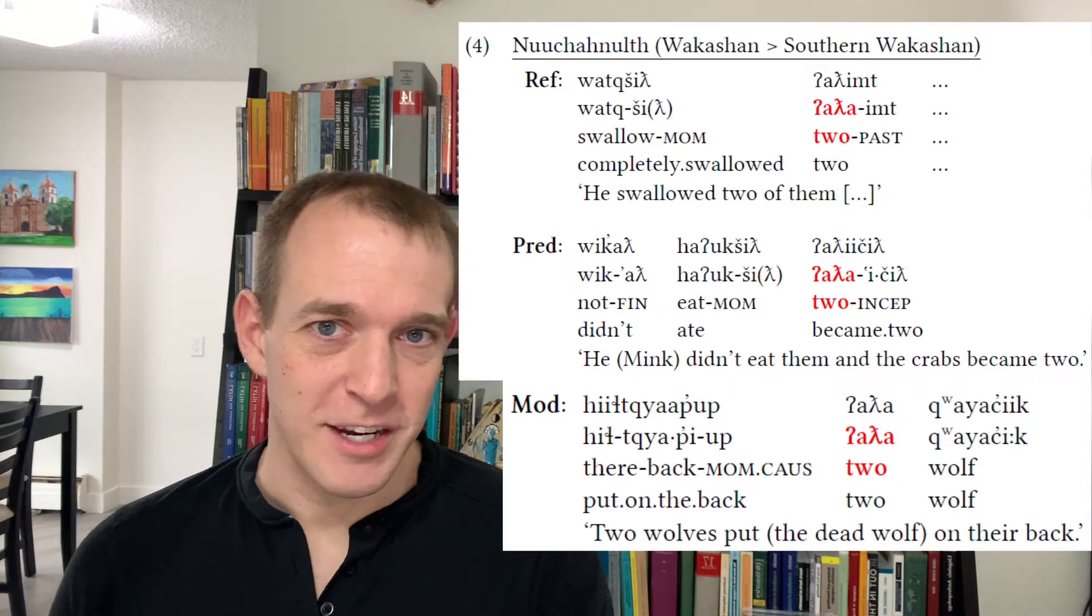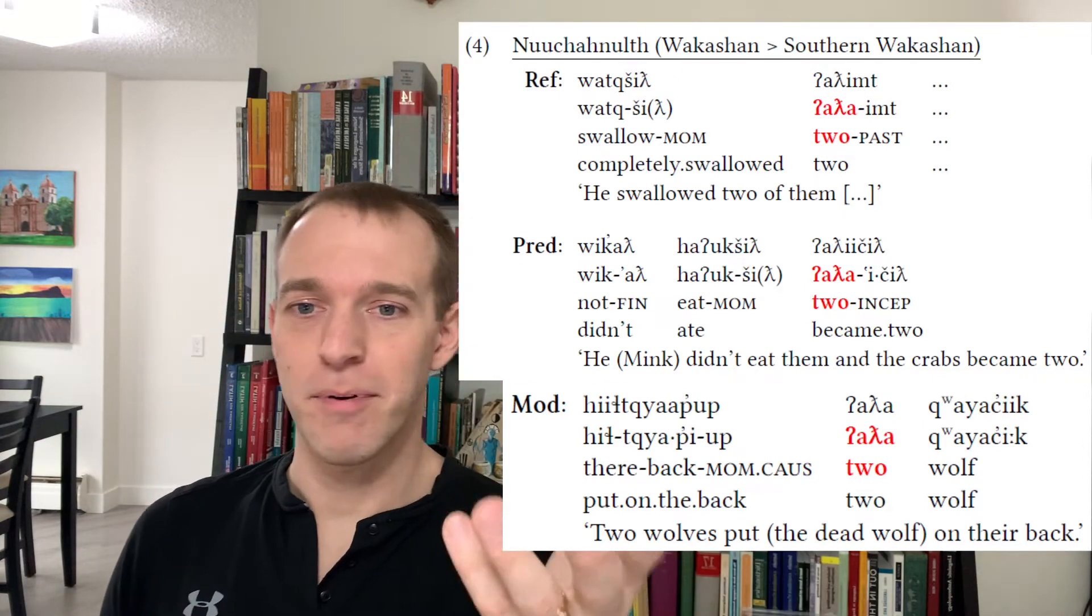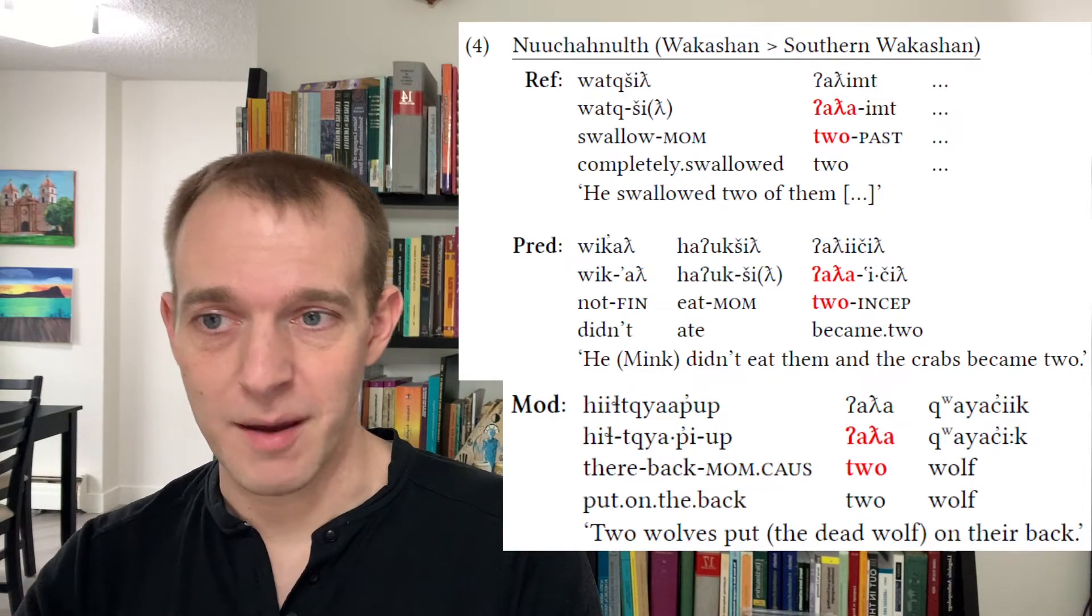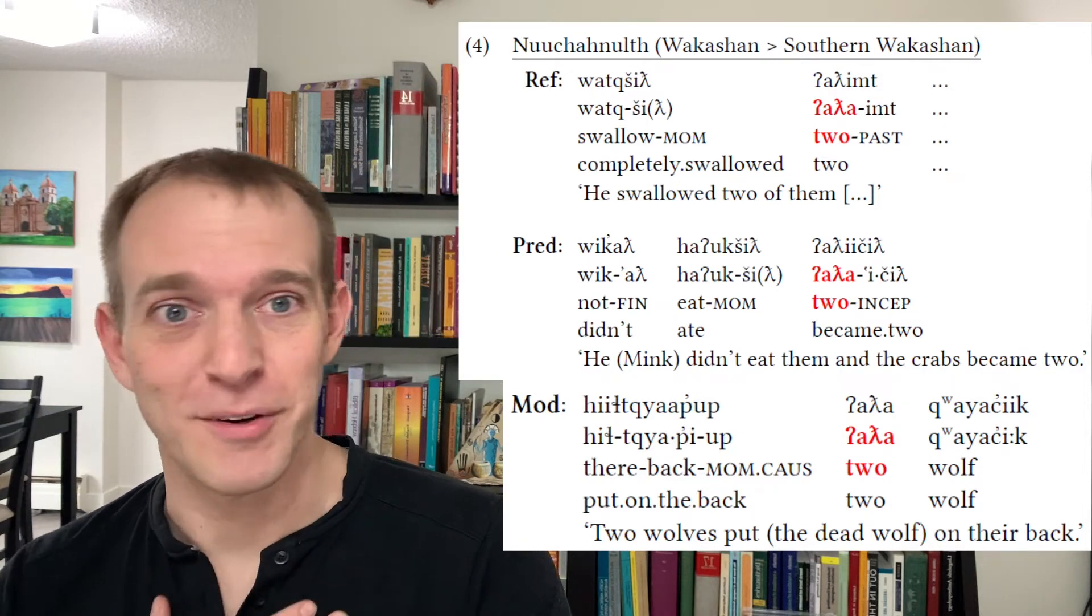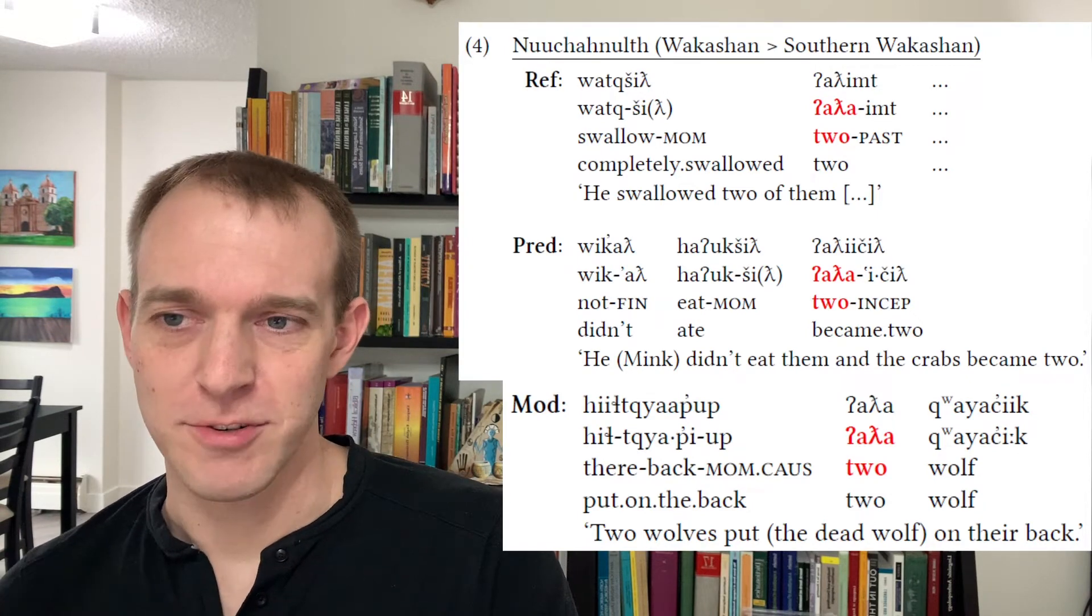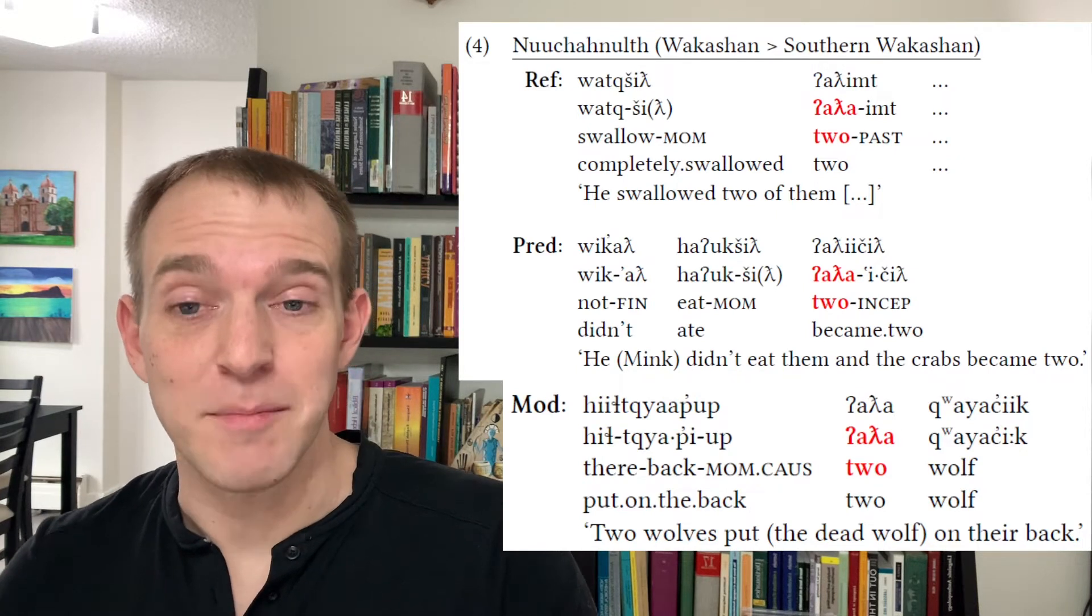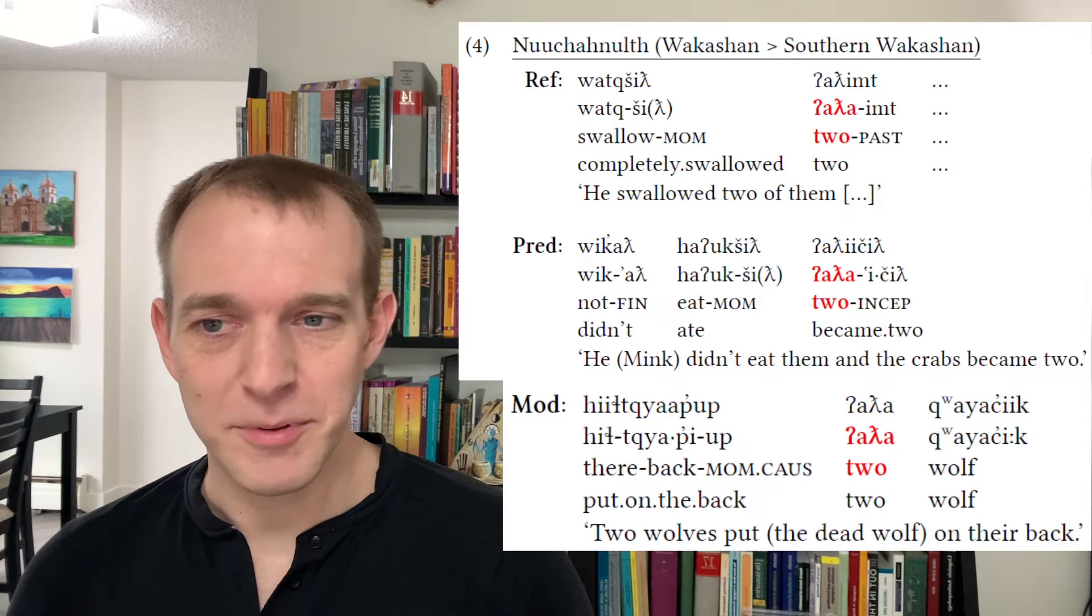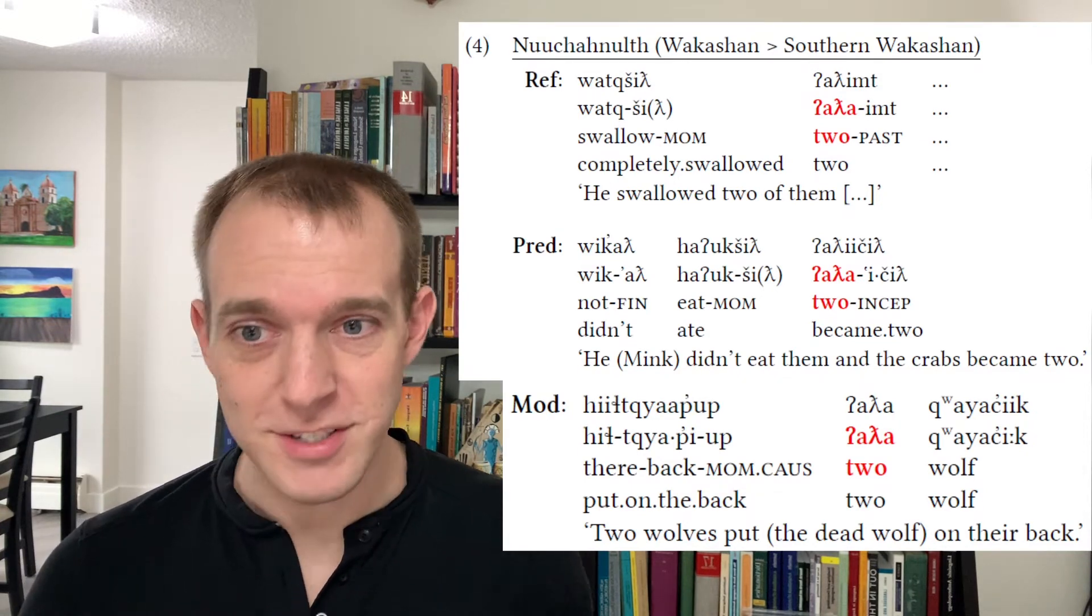So in Nuchannath here, this is a classic example. You have a stem meaning two, and it can be used as a referent, predicate, or modifier in each of these examples. So in the first example, it's he swallowed two of them. So it's being used as a referent. He swallowed the two. And there's a great example of a past tense marker on a noun, by the way. So like the two past people that are dead now because they were swallowed. These are from some traditional legends in the language. In the second example, you have a predicate, a verb. So they became two. So you have that same stem that has an inceptive marker on it, like a becoming. And in the final example,